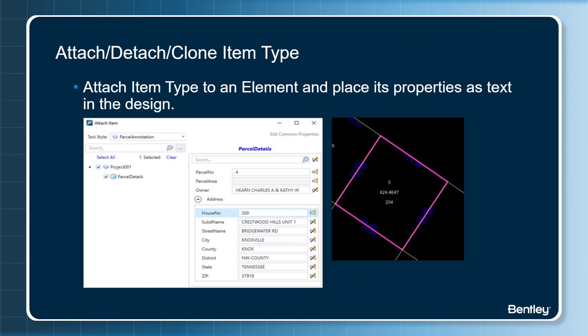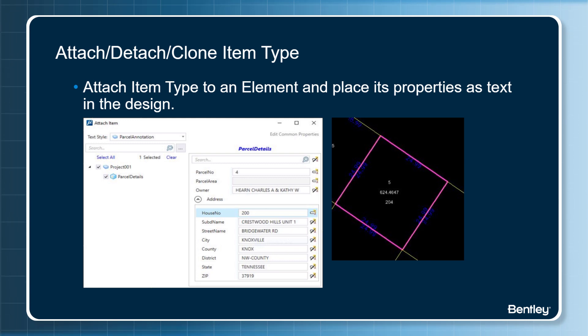Once the item types are defined, they can be attached to graphical elements within your project. This is a geo dataset and we are attaching item type parcel details to the shape elements.